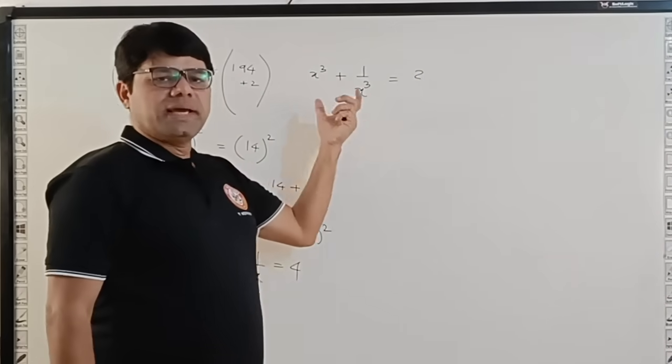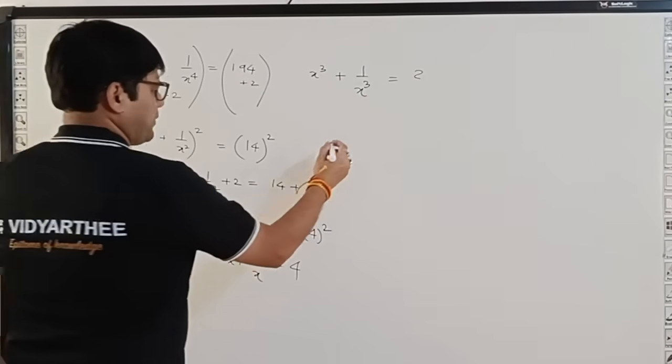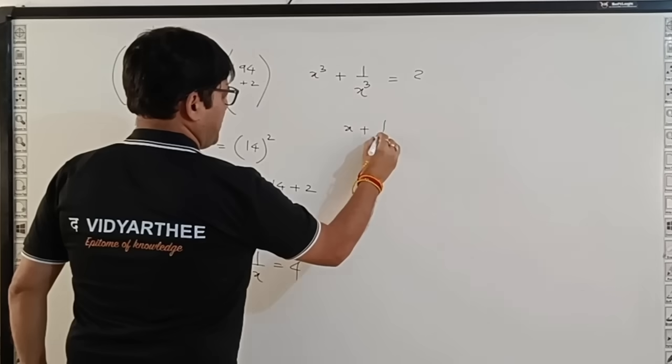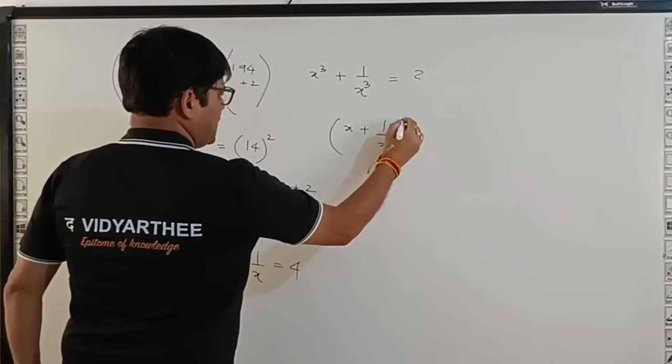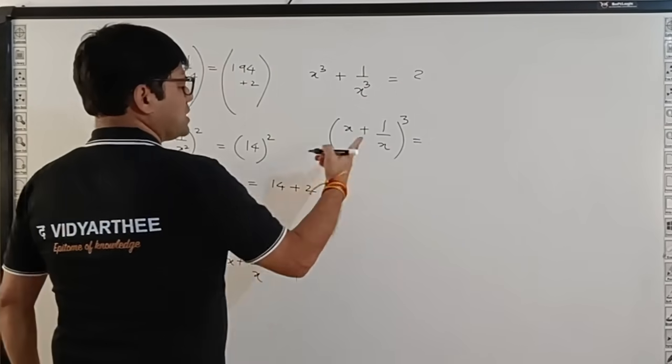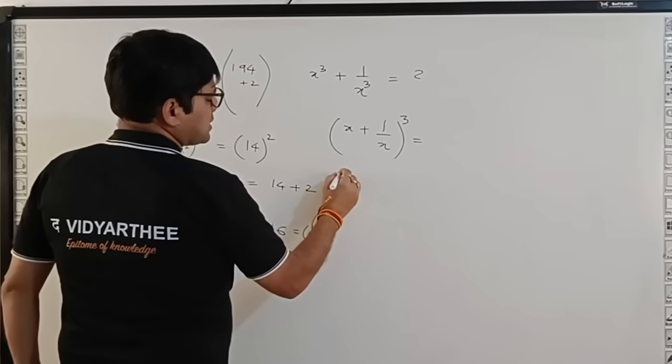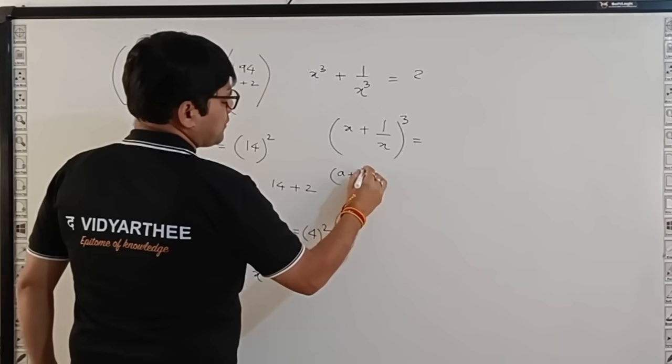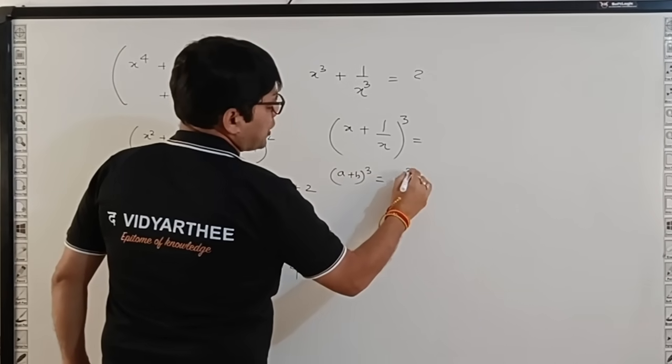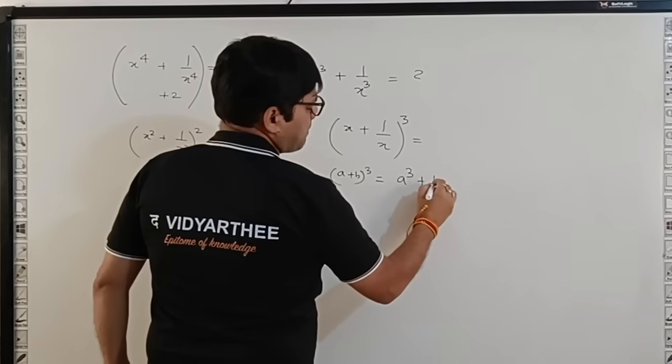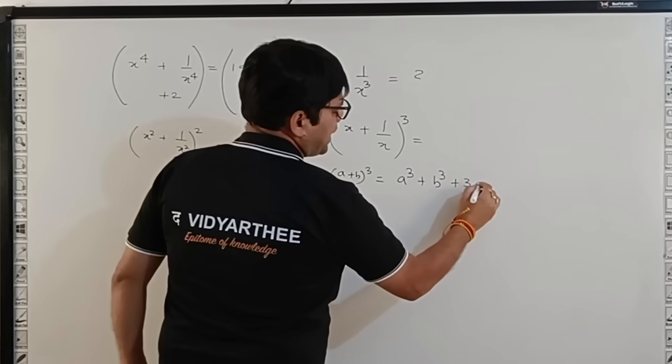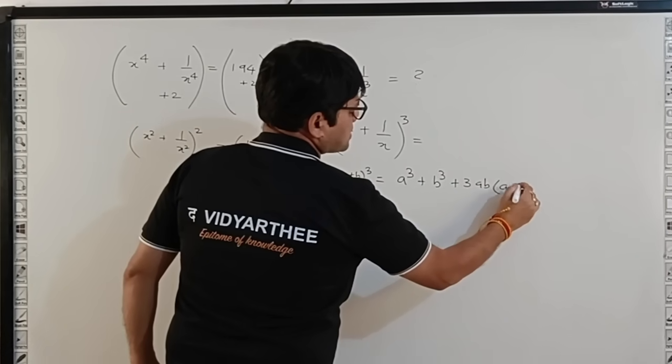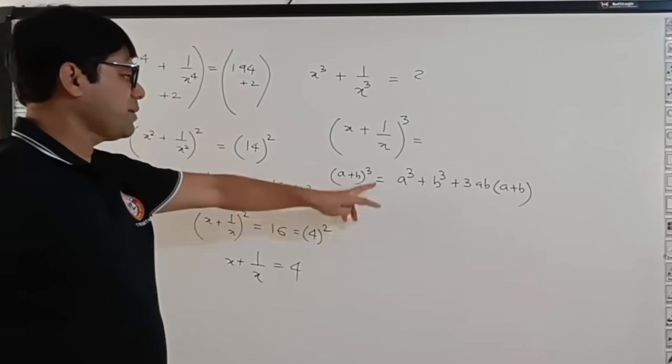Now to achieve x^3 + 1/x^3, what I need to do is take the cube of (x + 1/x). You know the formula for this: (a + b)^3 can be written as a^3 + b^3 + 3ab(a + b). Using the same formula...